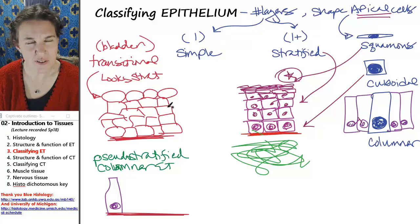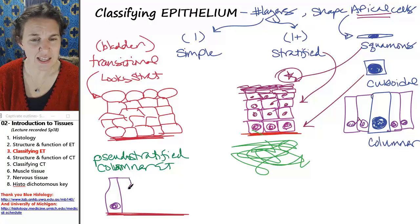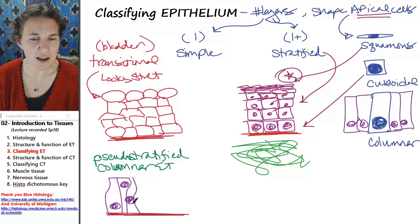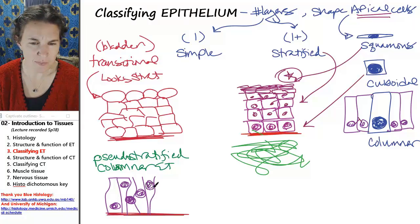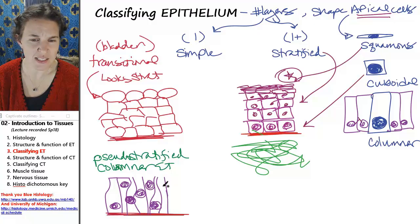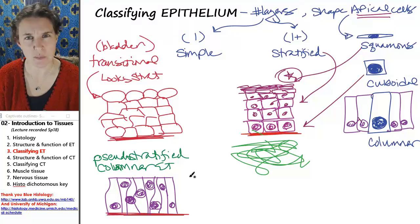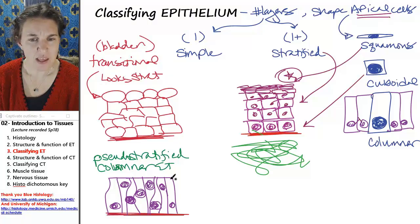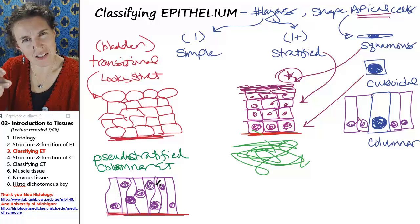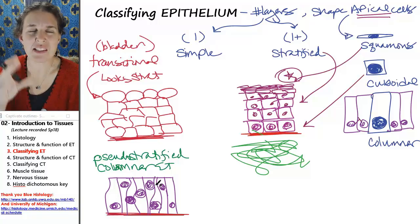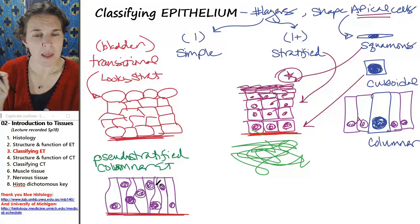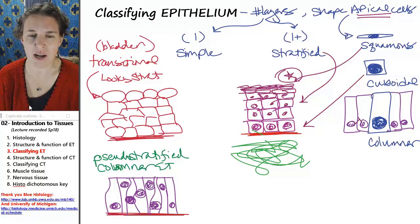In pseudostratified columnar epithelium, it looks like it is stratified tissue, and that's because the nuclei are all over the place. They're all over the place because, well, I actually have absolutely no idea why they're all over the place. But do you see how every single cell does reach the basement membrane and the lumen? That's the requirement for a simple tissue. It touches both the basement membrane and the lumen so we just have one layer of cells, but because the nuclei are all over the place for whatever reason, it looks like it's stratified. You have to be kind of careful when you're identifying this tissue.